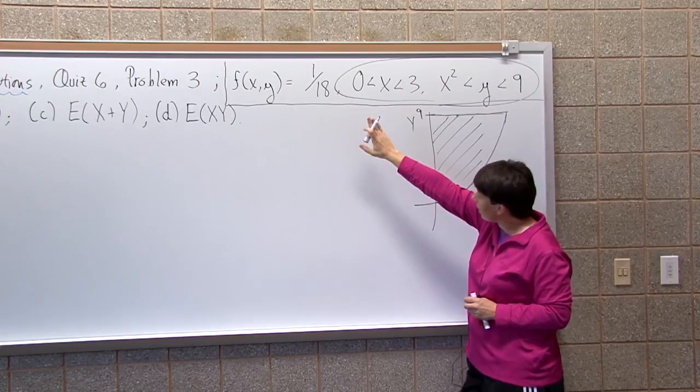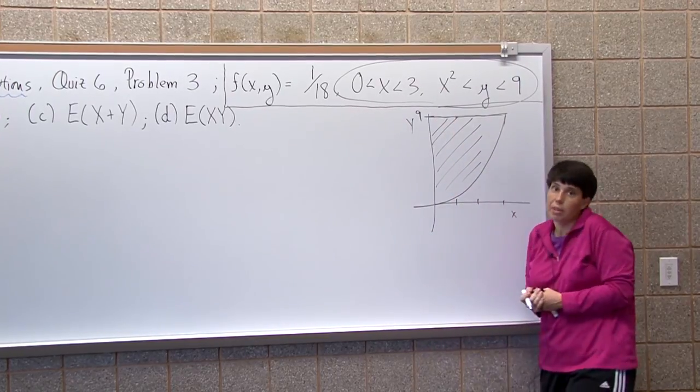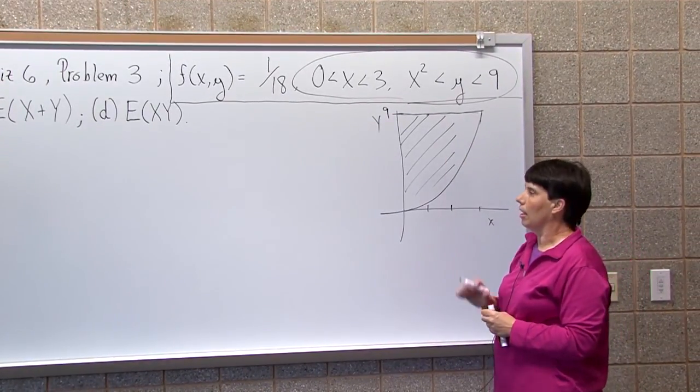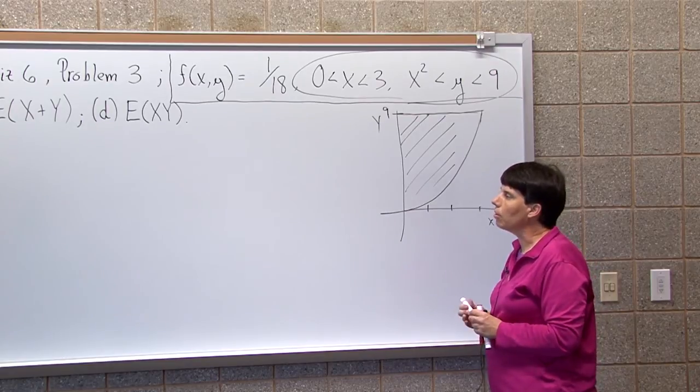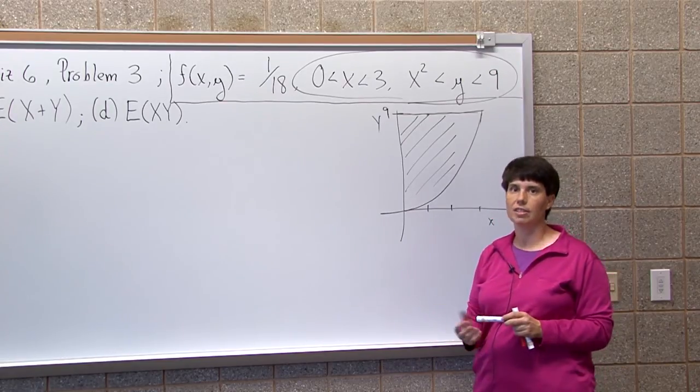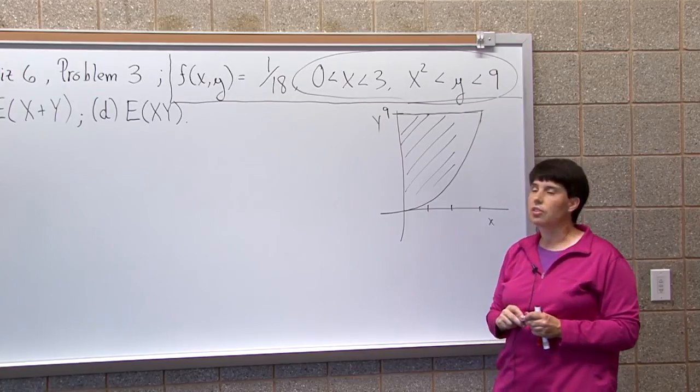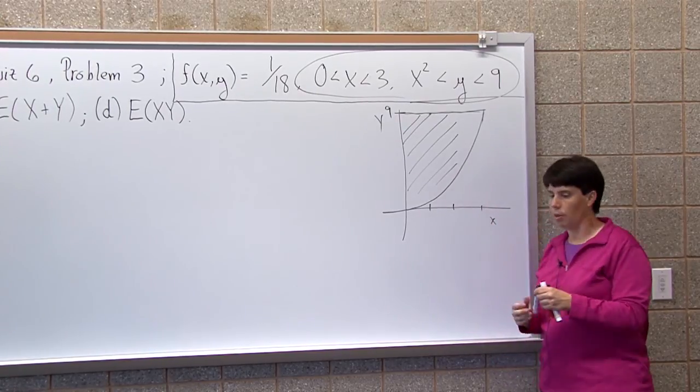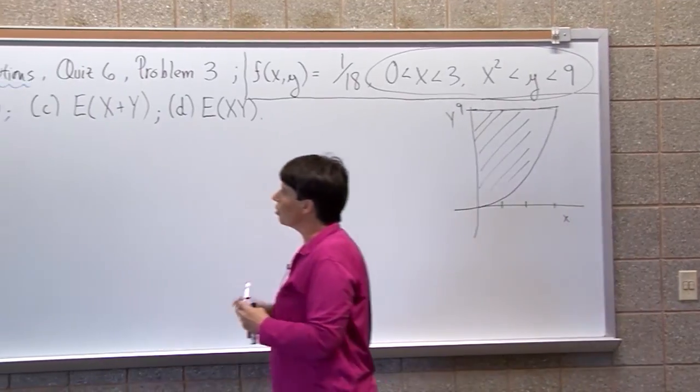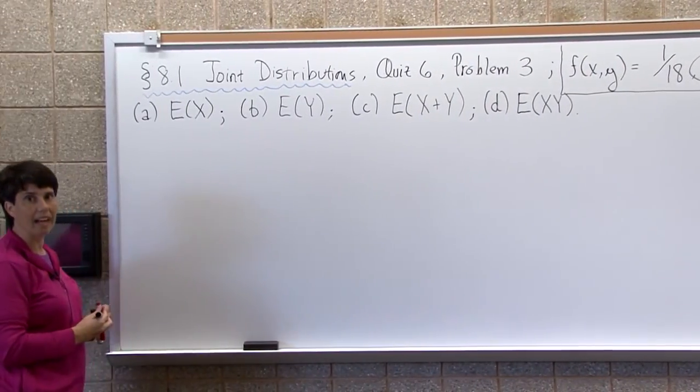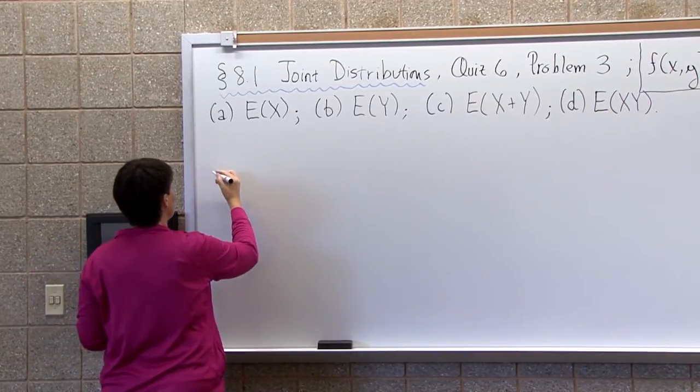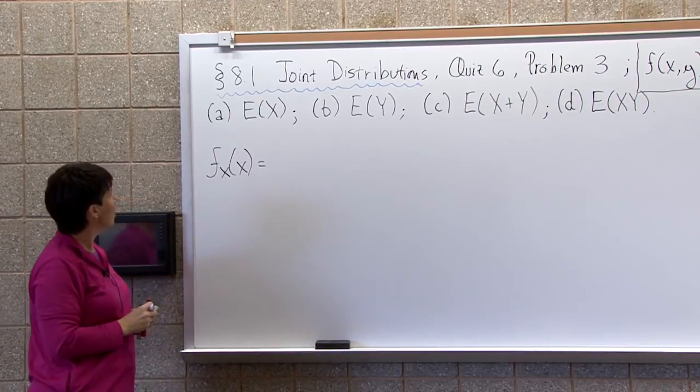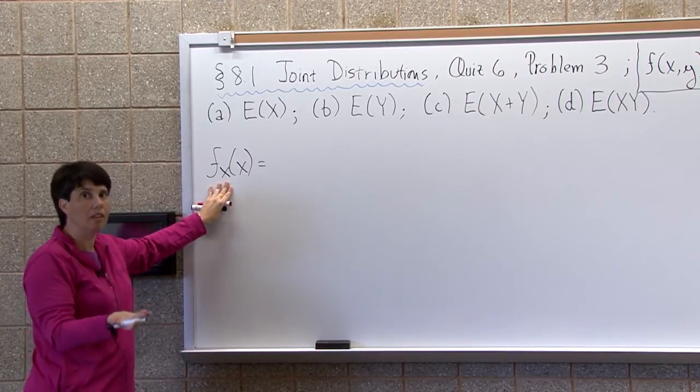If I were to integrate this function over this region, you're going to get 1 because it has to be a valid density function. That's my joint and I want to find expected value of x, expected value of y. In order to find expected value of x, I need the marginal for x. To do a and b, I'm going to need marginals. To find the marginal for x, I have to integrate over my y's, and the thing I'm integrating is my joint.